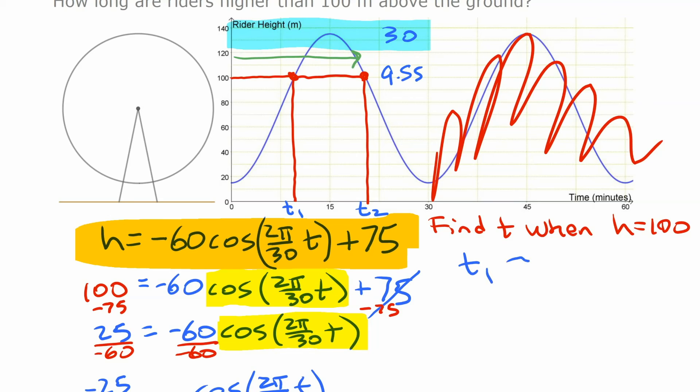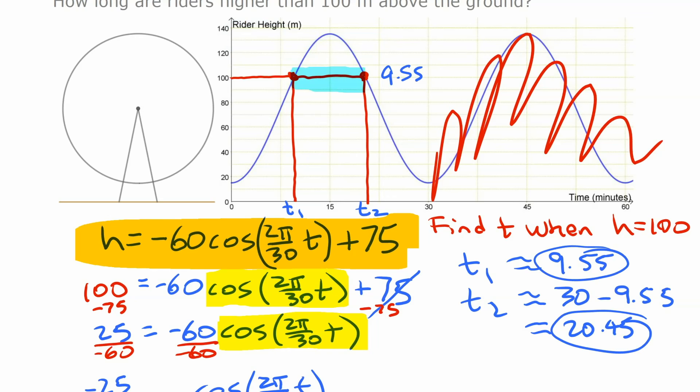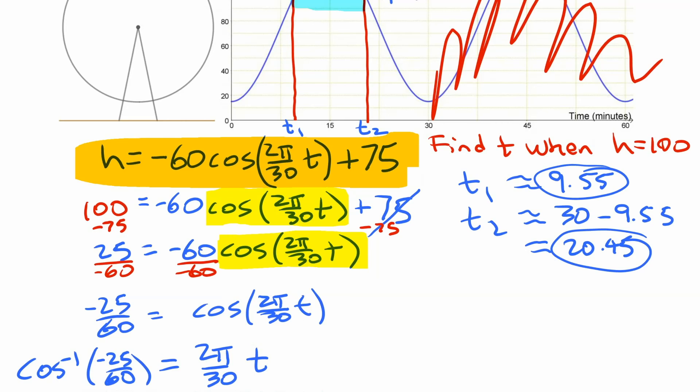All right, when we do that, we're going to write down here, time 1 was roughly 9.55, and time 2, we're going to get by taking 30 minutes and subtracting that 9.55. And so what you get is, that's actually 20.45. So we have our two values there, 9.55 and 20.45, and we said to find the time that we're looking for here, we want the time in between there, so if we subtract those two, we'll get our answer. So we're going to say time above 100 meters is approximately 20.45 minus 9.55, which is 10.9 minutes. So we got approximately 10.9 minutes. You could even just call it 11 minutes because of the approximate nature of the values we used, as we said before.